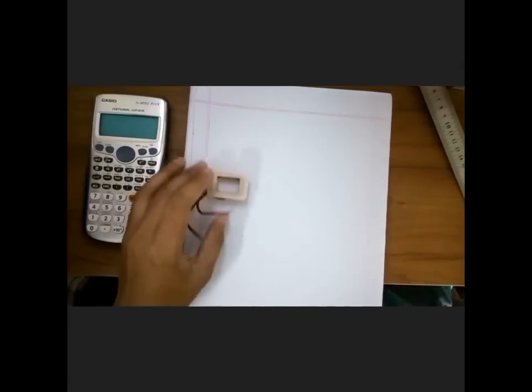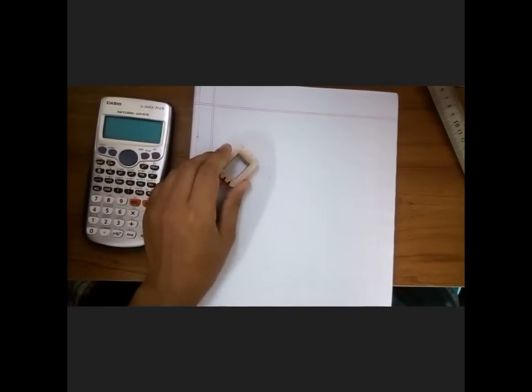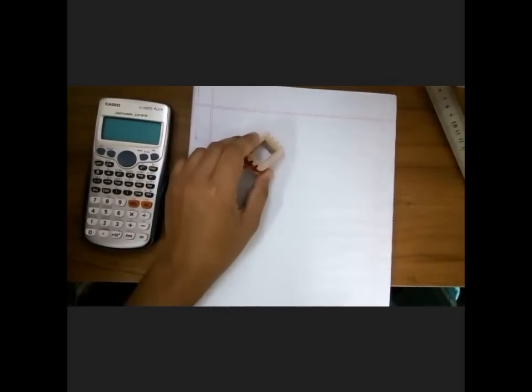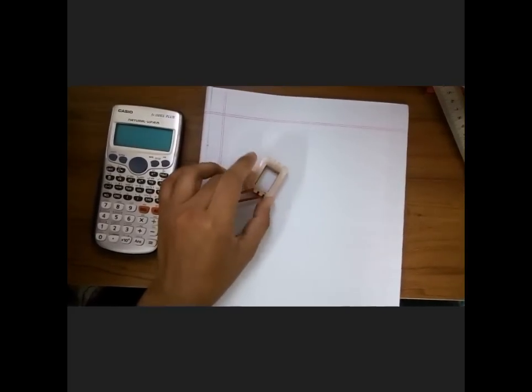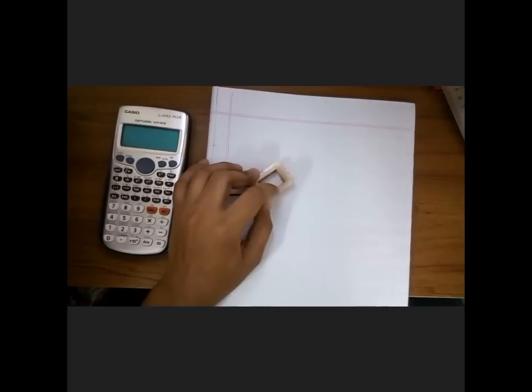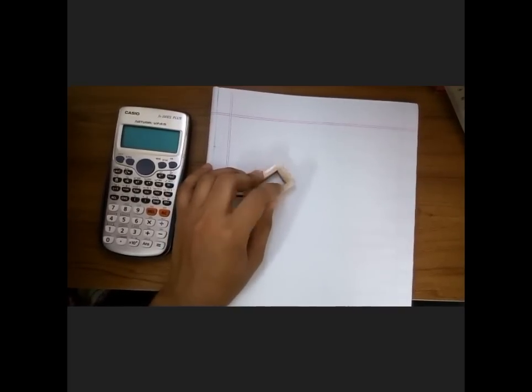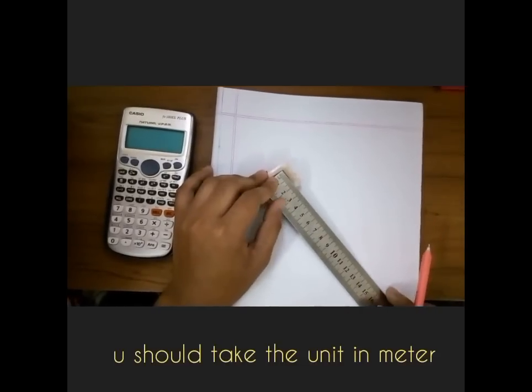Here I have a transformer. The winding is very small, you know, but for example you can take this. And we have to first calculate its area, but remember we should take the unit in meter.